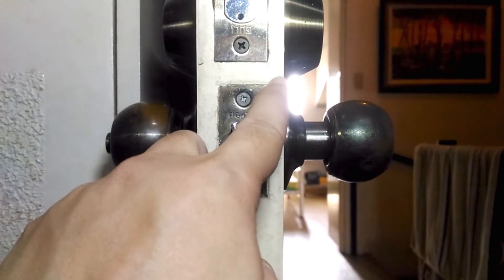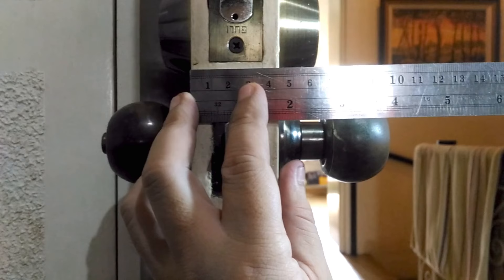Before even buying a replacement set, it's important to know the thickness of your door. This door is about 4 centimeters, 43 millimeters to be exact.